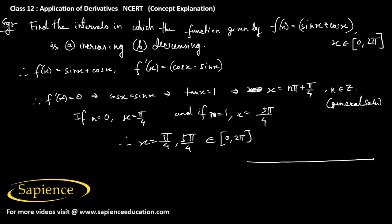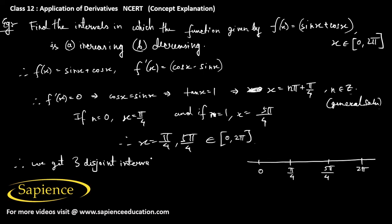Drawing the number line with 0, π/4, 5π/4, and 2π, we get three disjoint intervals: (0, π/4), (π/4, 5π/4), and (5π/4, 2π).